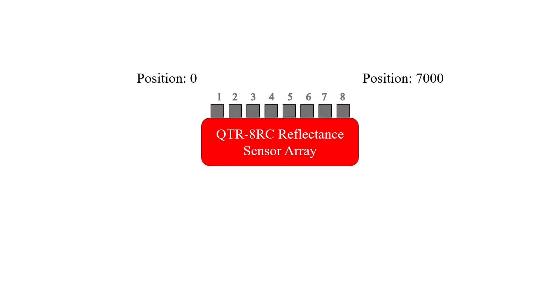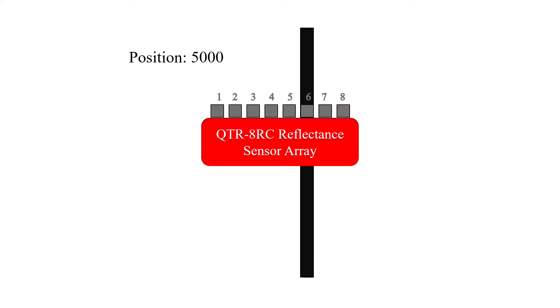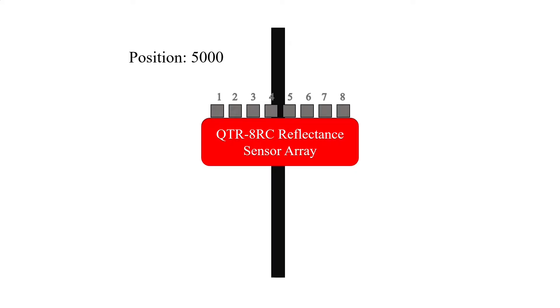This sensor array comes with a library that can be used in Arduino to make it easier to read and implement when programming. In short, when the sensor detects the line, it will display a value between 0 and 7000, which usually indicates near which sensor is located. If it displays 3500, then it is between sensors 4 and 5.